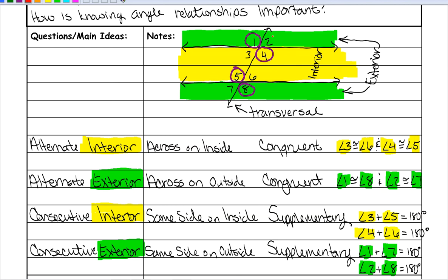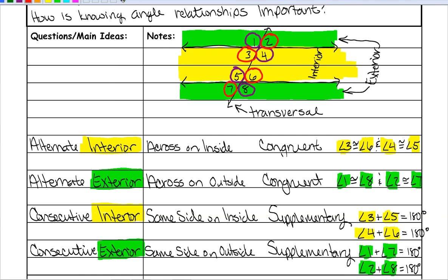The other set of angles will all be congruent to each other as well. Angles 2 and 3 are vertical, 3 and 6 are alternate interior, and 6 and 7 are also vertical.